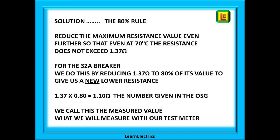Staying with our type B 32 amp breaker: if we know that at 70 degrees the resistance should not exceed 1.37 ohms, we can work backwards from 1.37 and find a resistance value at 20 degrees that guarantees that even at 70 degrees we will still have 160A of fault current. The factor to use is 0.8 — in other words, only use 80% of the 1.37 ohms. 1.37 multiplied by 0.8 gives us a new and finished value of 1.1 ohms, which we call the measured value.